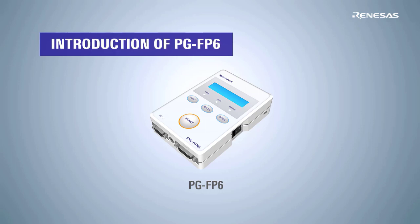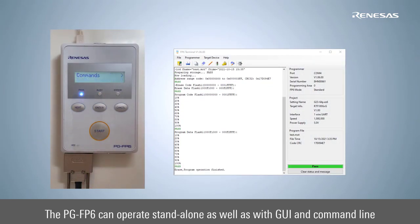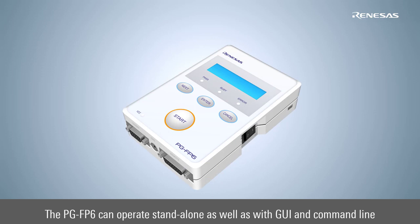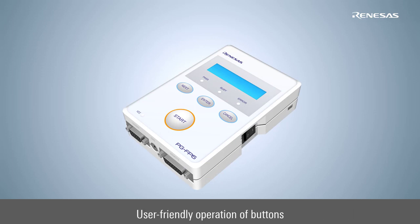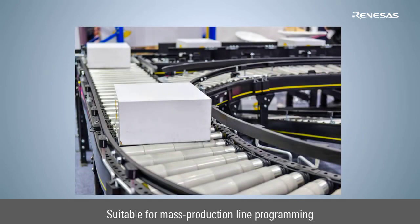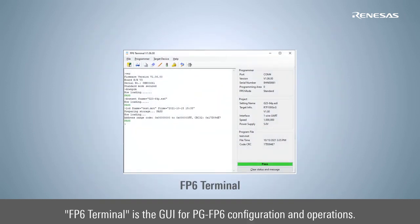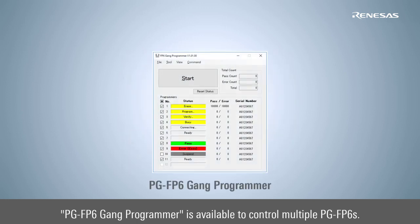Next, let's move on to the PGFP6. It is a Flash memory programming tool that can be operated via GUI and command line. Standalone operation is also possible by using buttons or remote signals. It is easy to operate with good management functions and suitable for mass production programming. The control software includes the FP6 terminal for configuration and programming operations and the PGFP6 gang programmer for simultaneous control of multiple PGFP6 units.